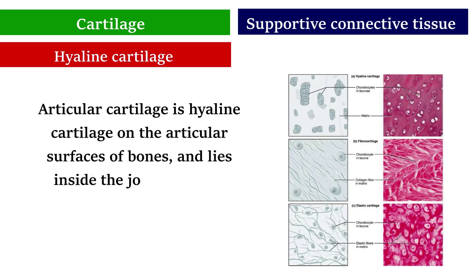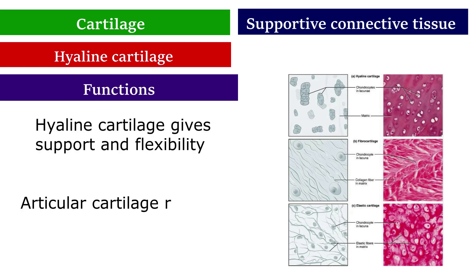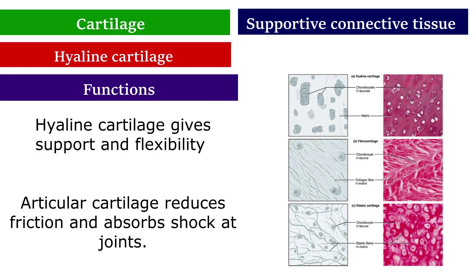Articular cartilage is hyaline cartilage on the articular surfaces of bones and lies inside the joint cavity of synovial joints. Functions: hyaline cartilage gives support and flexibility, while articular cartilage reduces friction and absorbs shock at joints.